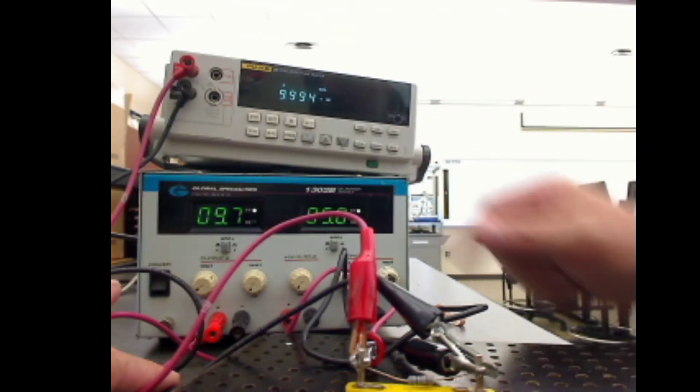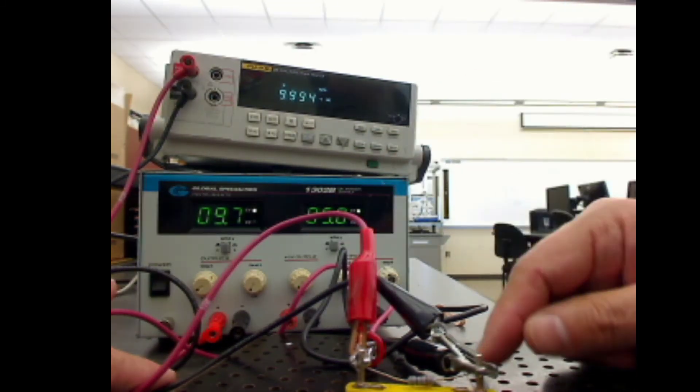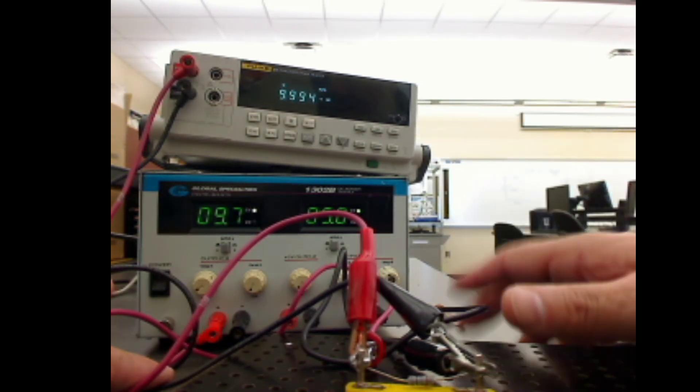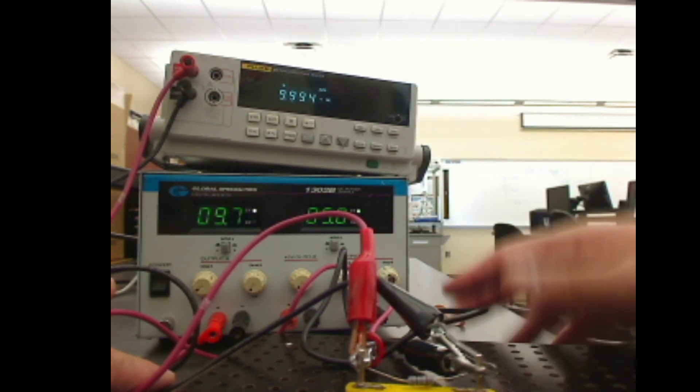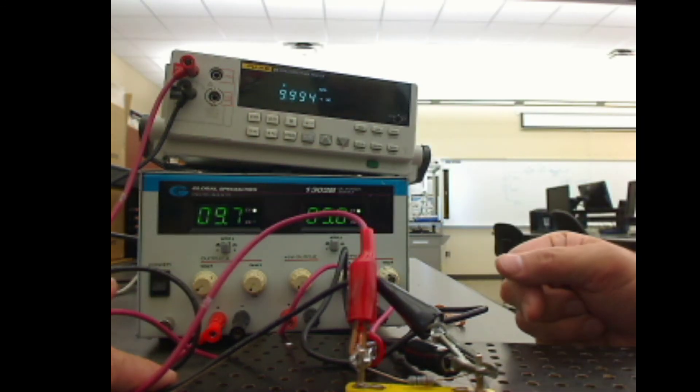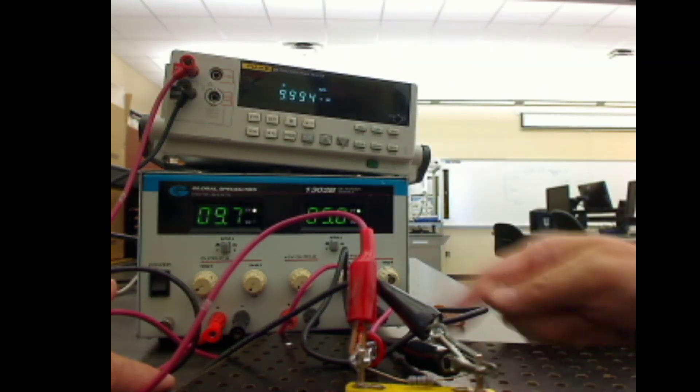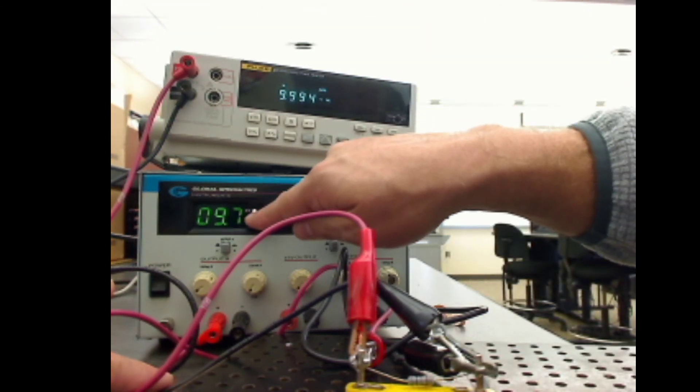Alright, so watch that constant current light, but always make sure before you start cranking that current knob: number one, that your circuit is correct and nothing's shorted out, and number two, just turn it just enough to allow that voltage to return back to your set voltage value and the constant voltage light to turn on.